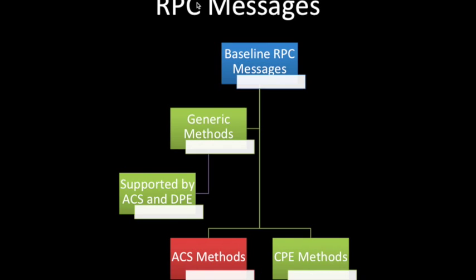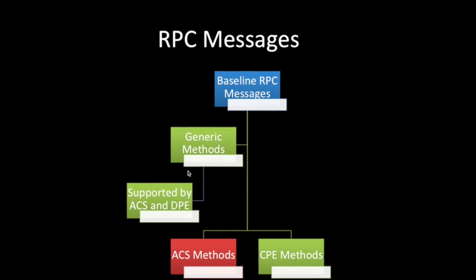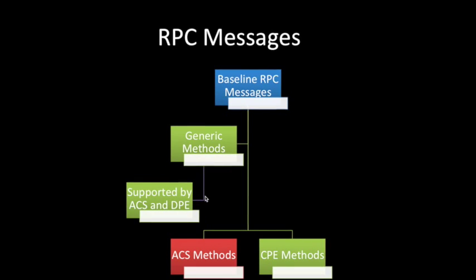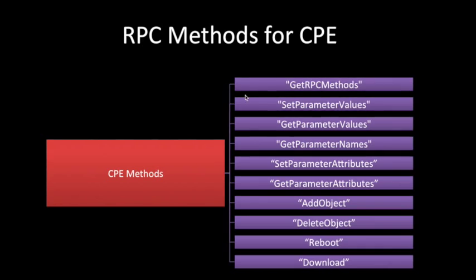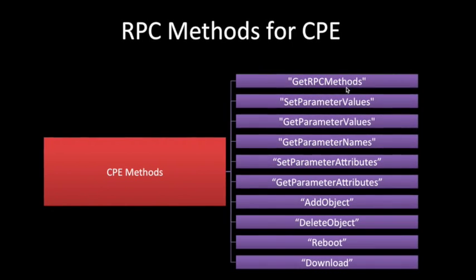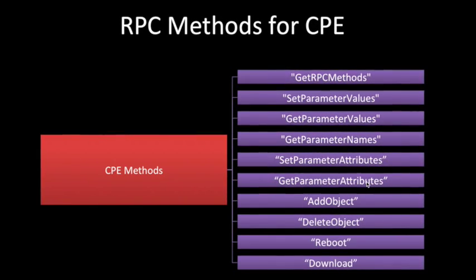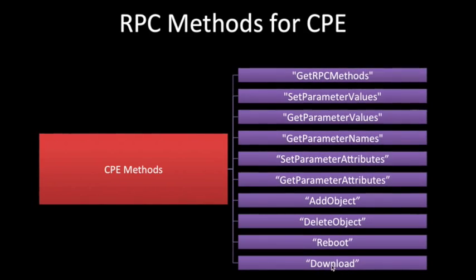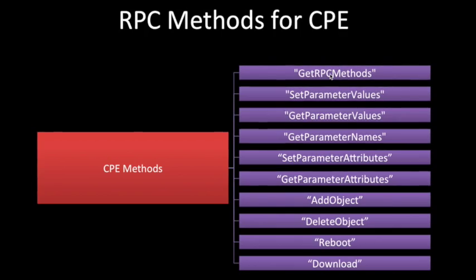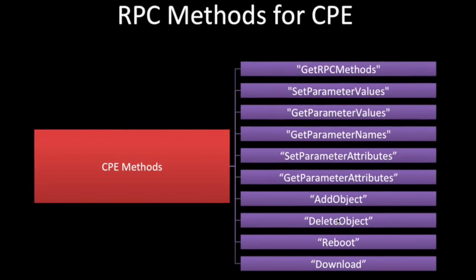There are broadly two categories of RPC methods: one for ACS and one for CPE. There are also a few generic methods supported by both ACS and CPE. The CPE methods include: GetRPCMethods, SetParameterValues, GetParameterValues, GetParameterNames, SetParameterAttributes, GetParameterAttributes, AddObject, DeleteObject, Reboot, and Download.